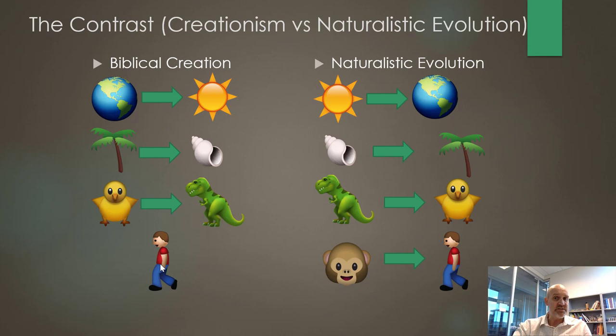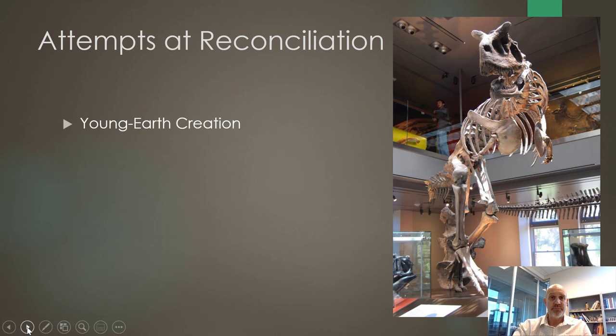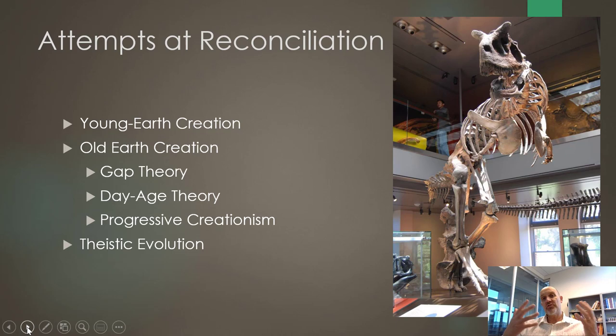Definitely a big difference in sequence and in the whole philosophy behind naturalistic evolution and creationism — and of course the fact that it happened in six literal days, which I believe. There are attempts at reconciliation. We have young earth creationists, old earth creationists, and theistic evolutionists. Young earth creationists basically just take the text the way it is — they read it literally and as it literally speaks, that's what it literally means.